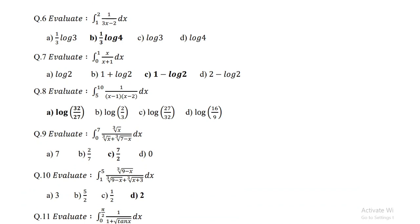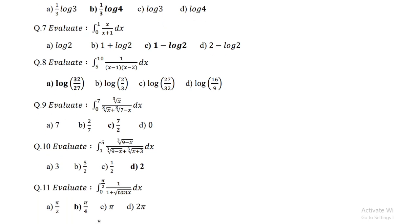Question number 6: integration of 1 to 2 of 1 by (3x minus 2) dx is 1 by 3 log 4. Question number 7: evaluate integration of 0 to 1 of x upon (x plus 1) dx, it is 1 minus log 2. Question number 8: evaluate integration of 5 to 10 of 1 upon (x minus 1)(x minus 2) dx, and the answer is log(32/27).